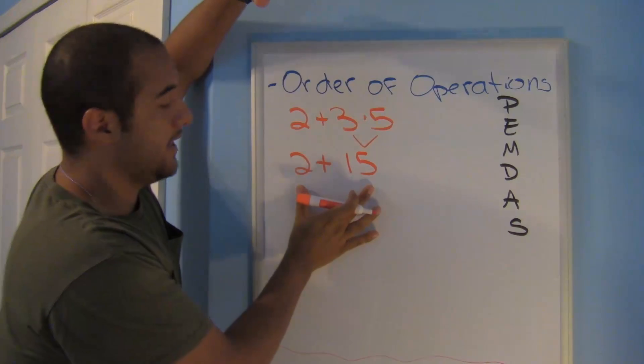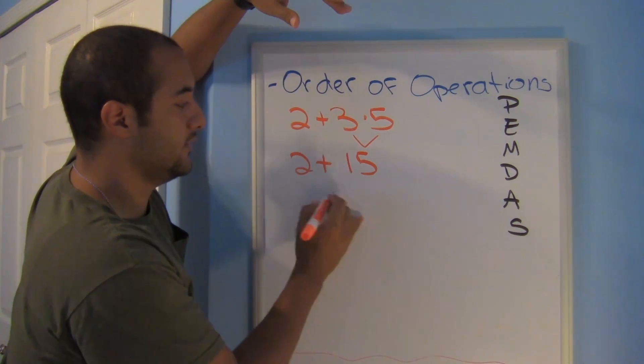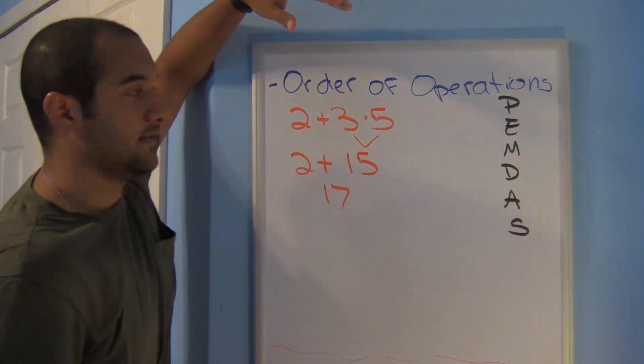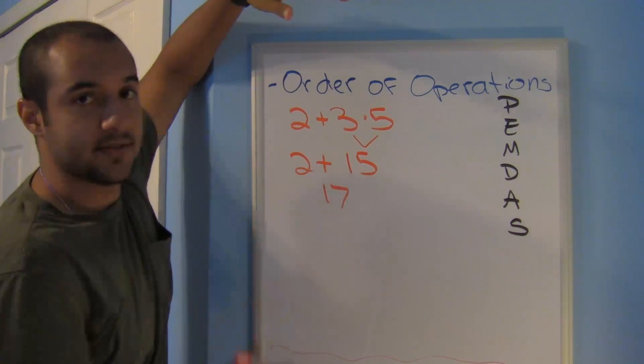3 times 5 is 15. And that's my new problem. That's all I have. Now I can just go ahead and add these 2. 2 plus 15 is 17. That's my final answer for this expression.